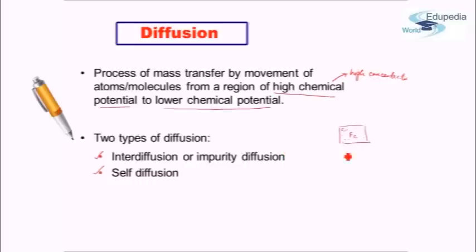Whereas if we have a material, let's again assume iron, and a particular iron atom moves and diffuses from one region to another region within the iron bulk, this is self-diffusion. Why so? Because the atom which is diffusing is the same atom as the bulk material. So it is called self-diffusion.